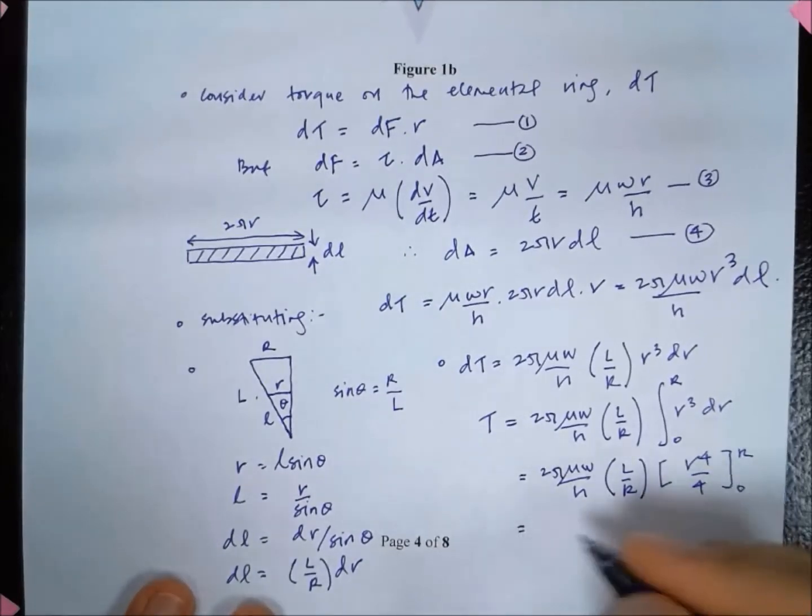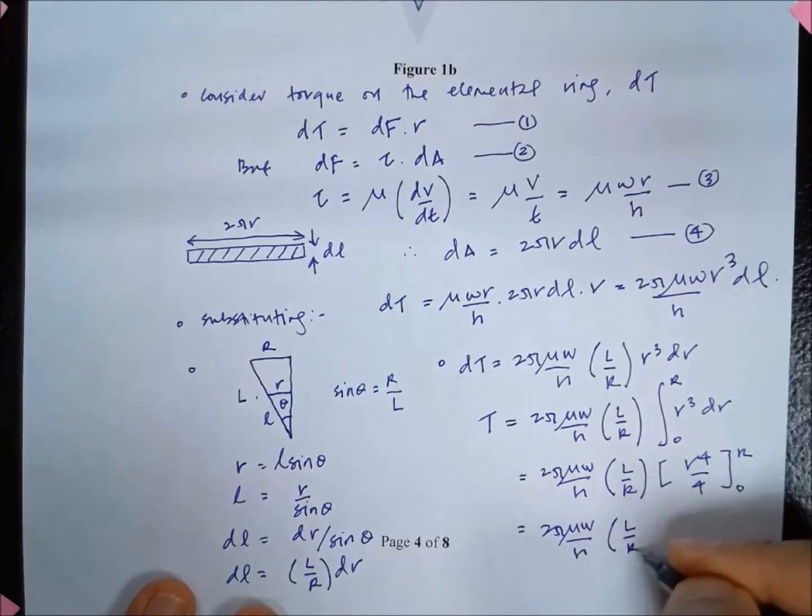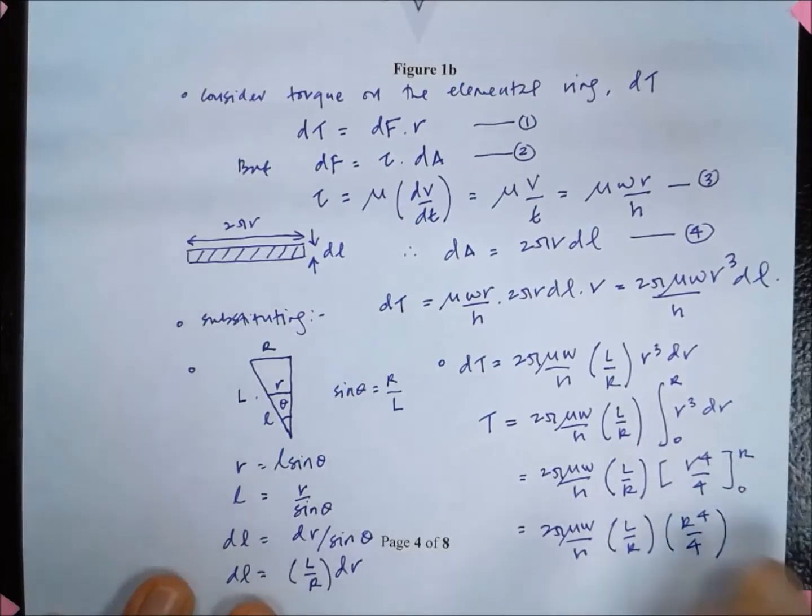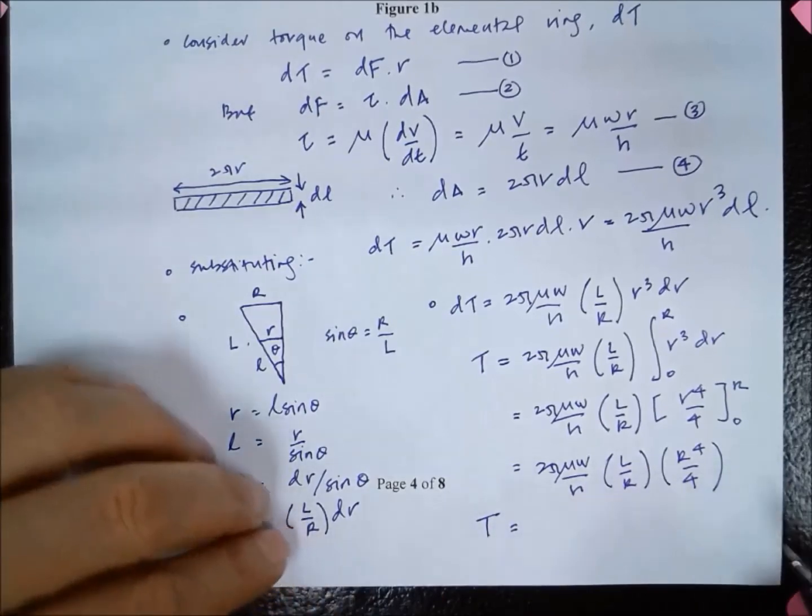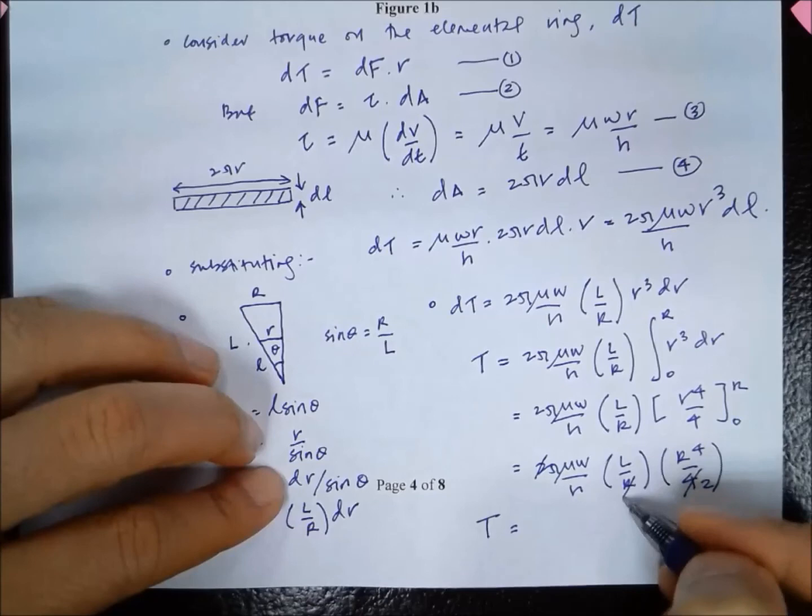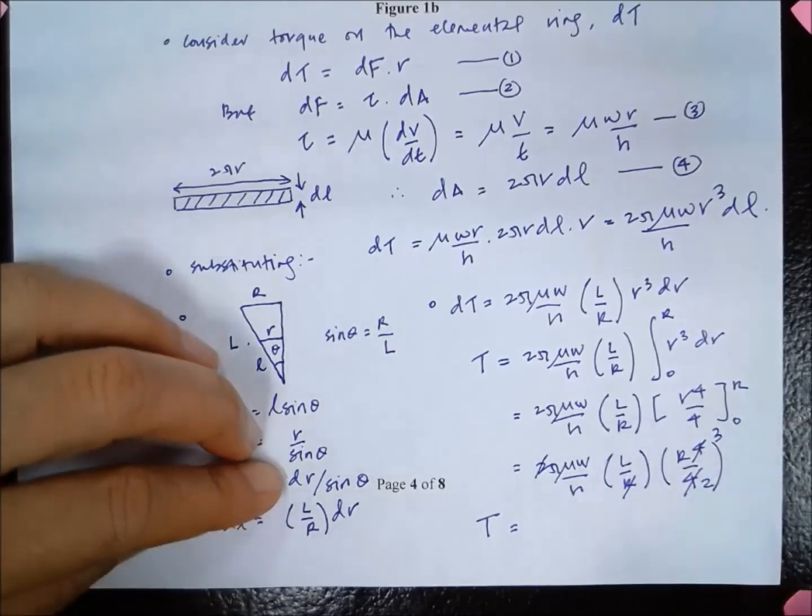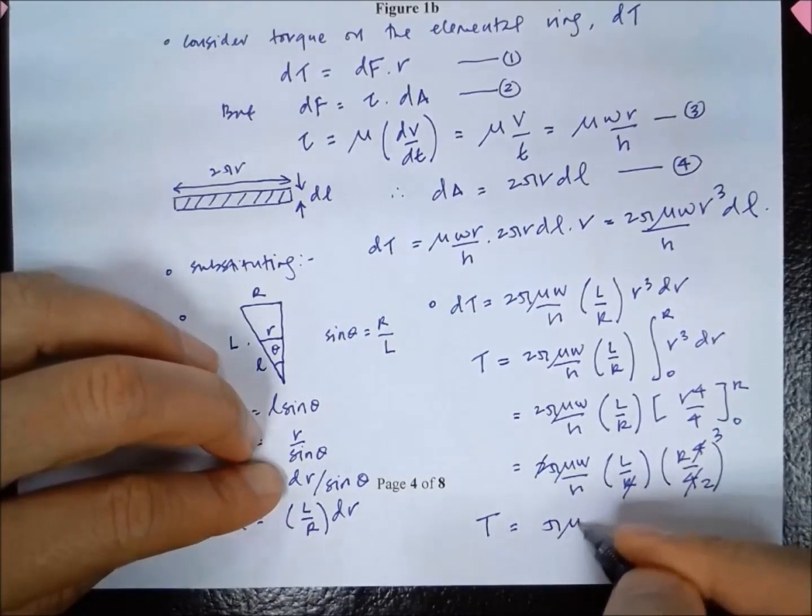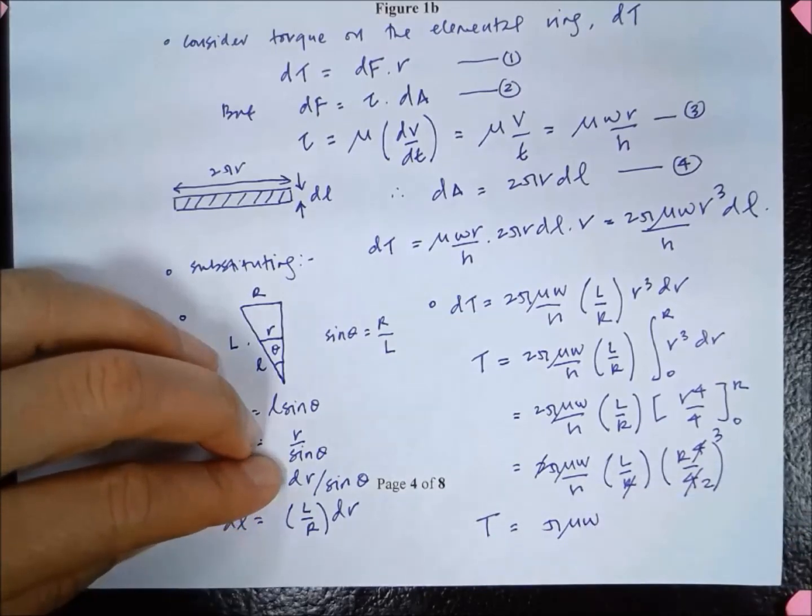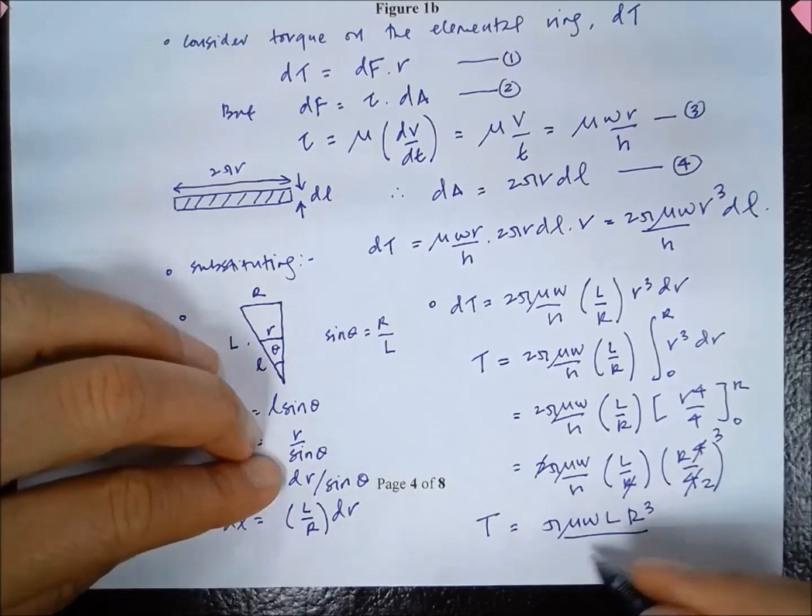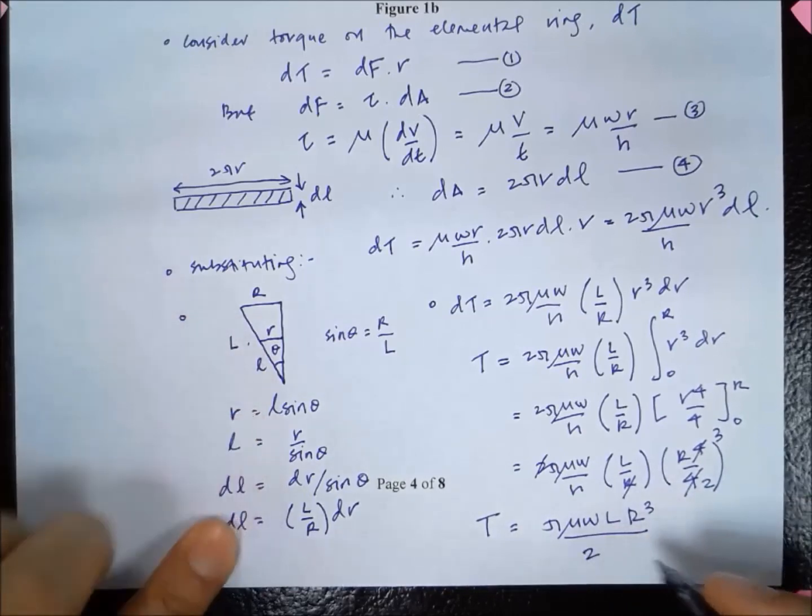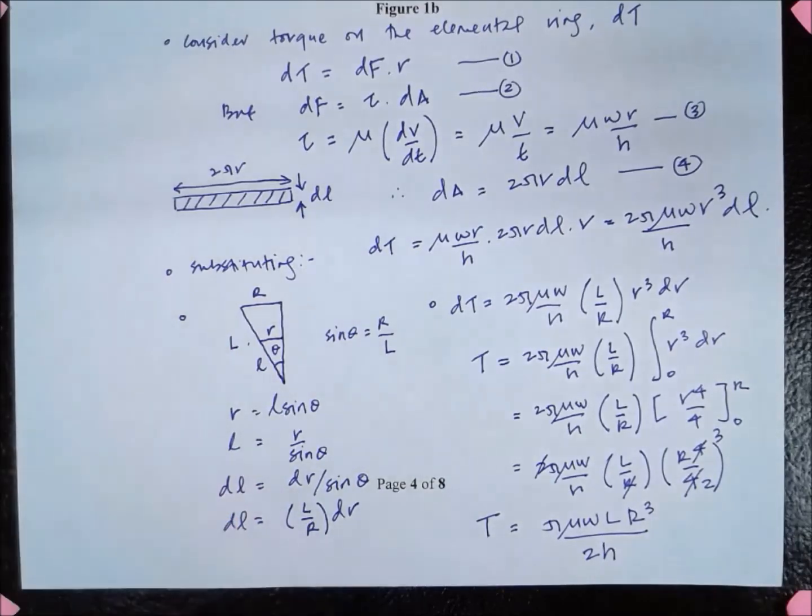That gives me 2π mu omega over h, L over R, R to the power of 4 over 4. The final answer is T is equal to π mu omega L R cubed over 2h.